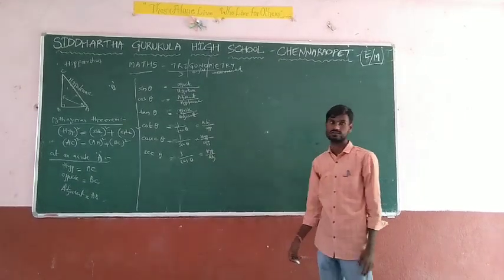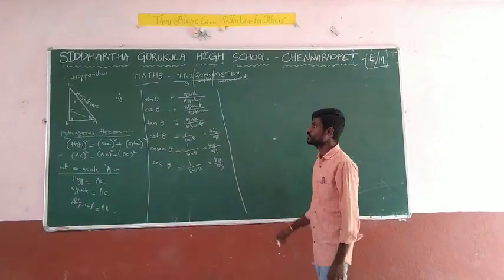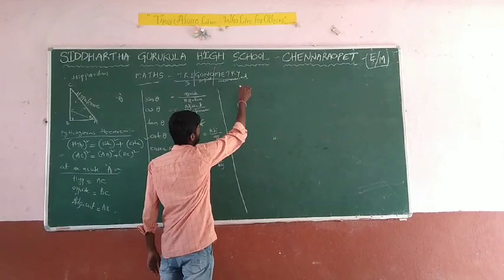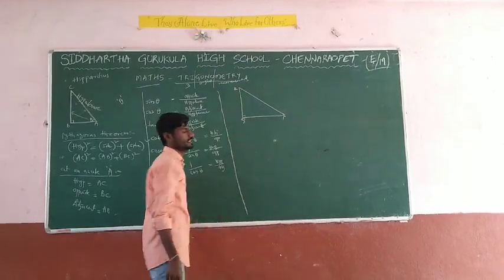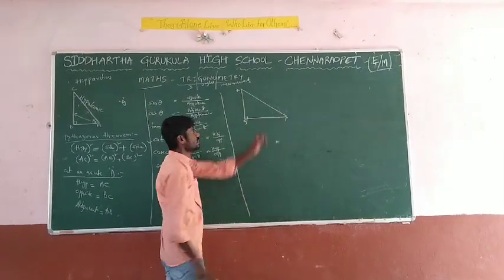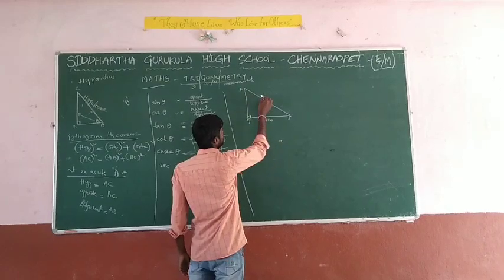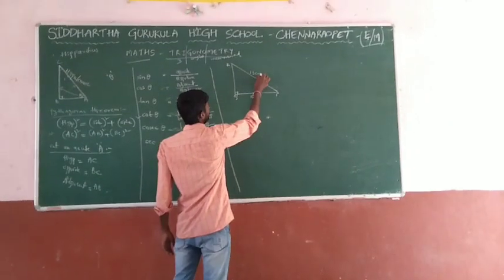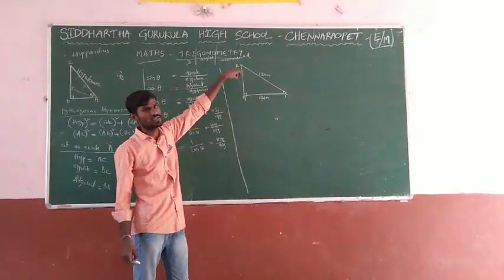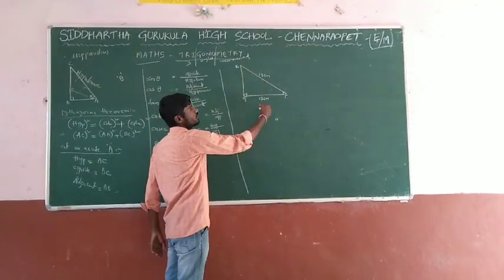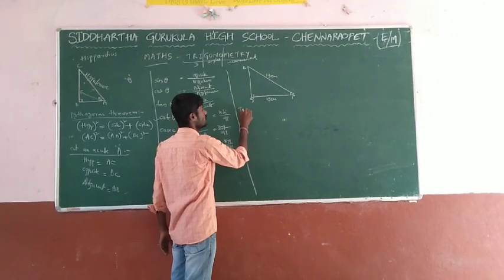Now to solve problems based on these, consider a right-angled triangle PQR, right-angled at Q. They are giving us three sides but only two values: 12 centimetres and 13 centimetres. They are asking us to find all six trigonometric ratios from this figure. Since we only have two sides, we need to find the third one using Pythagoras theorem.